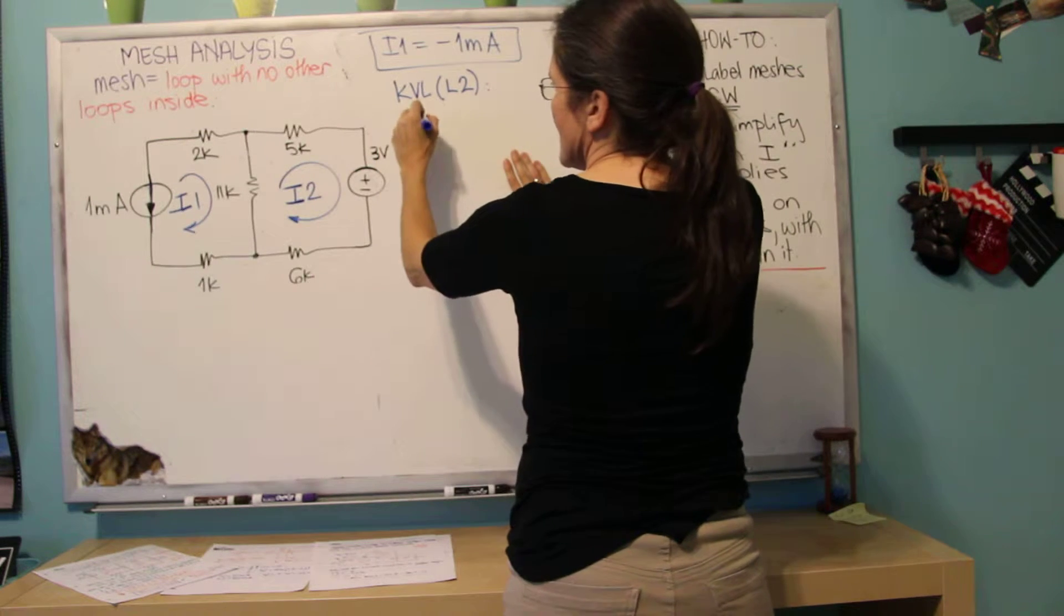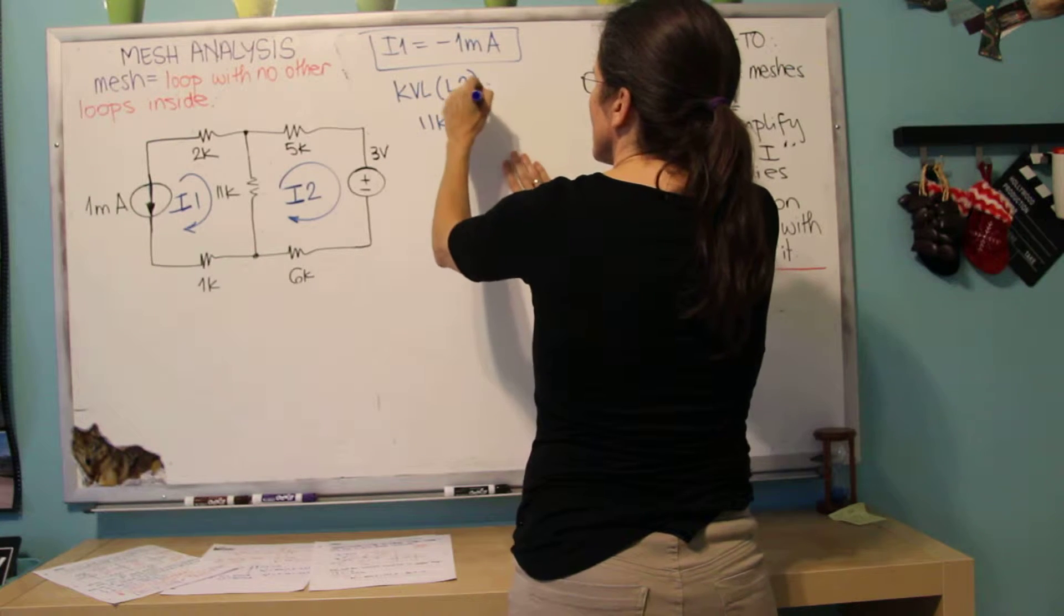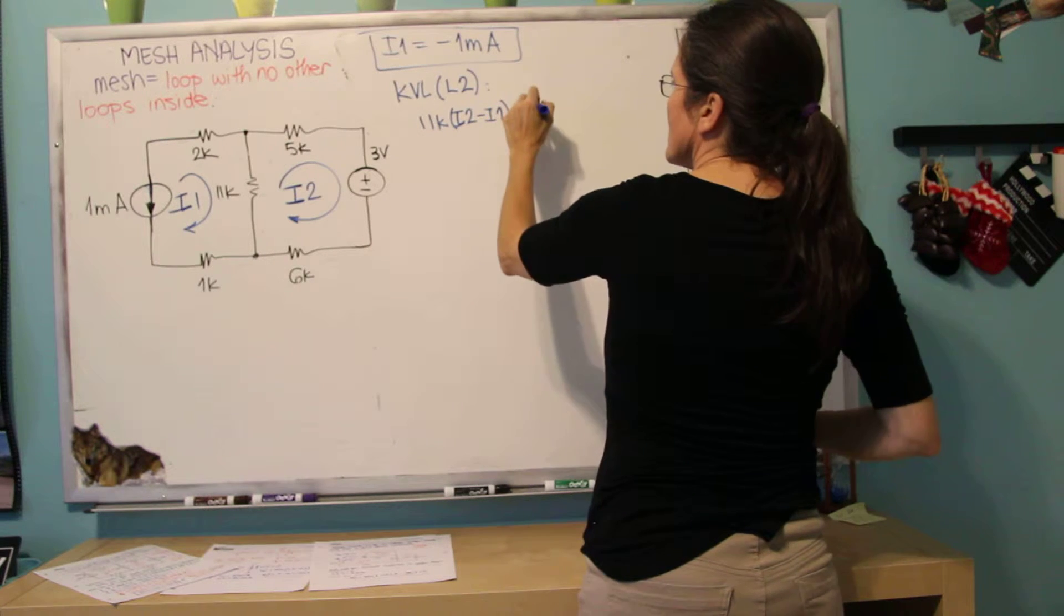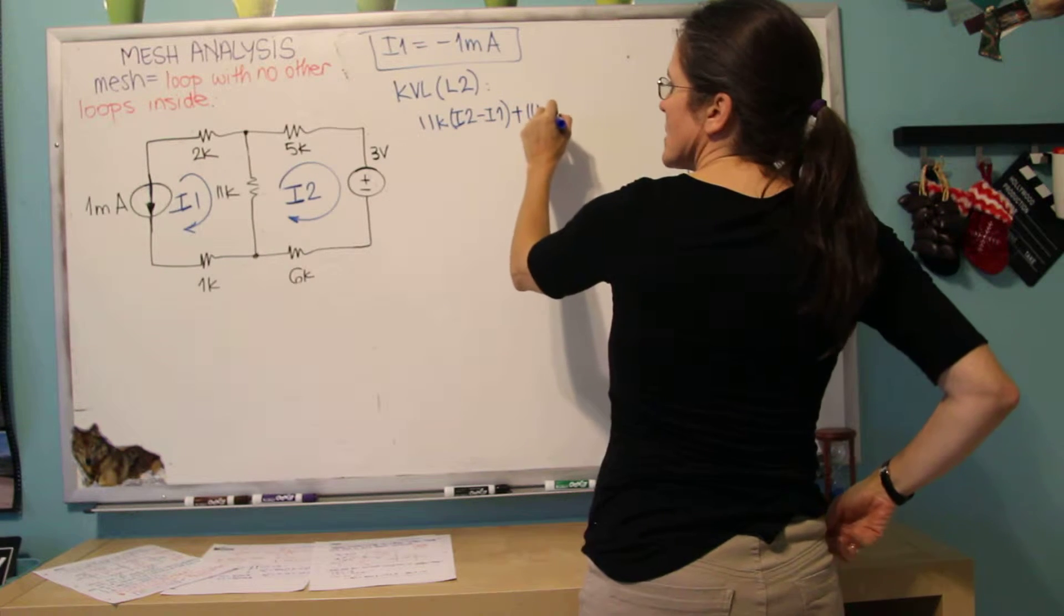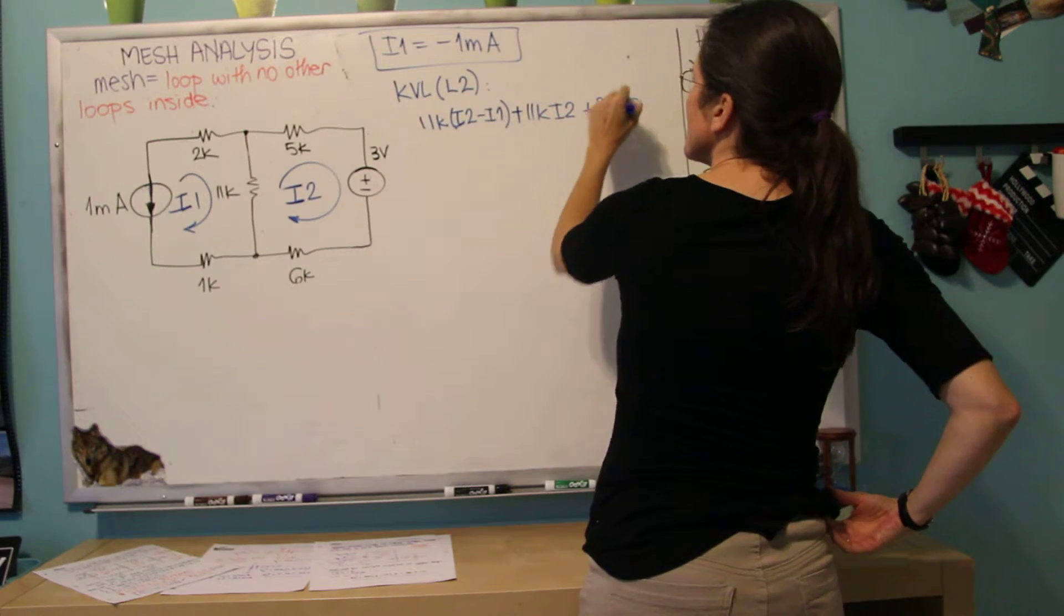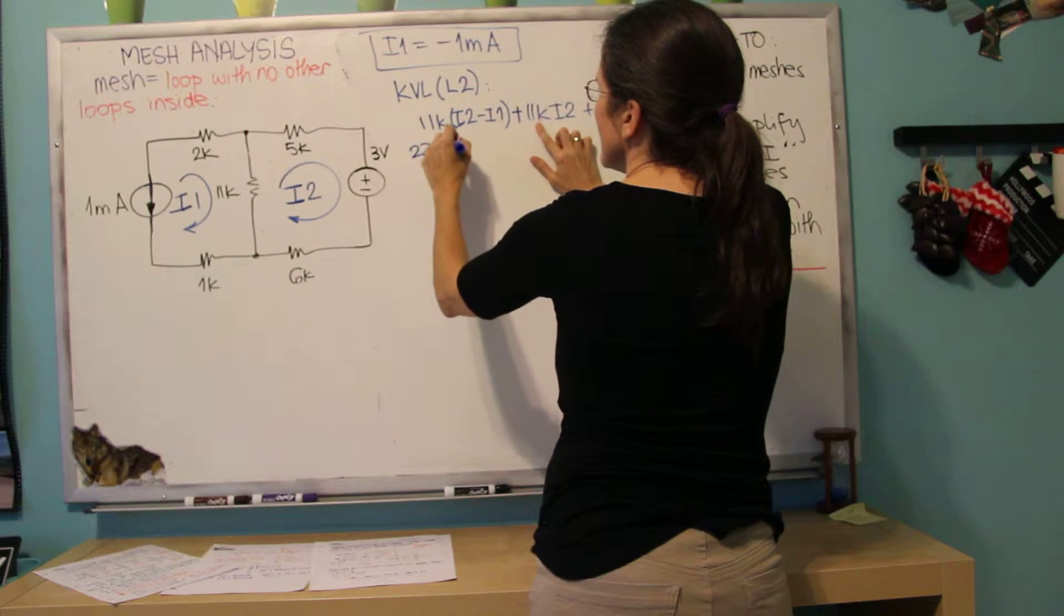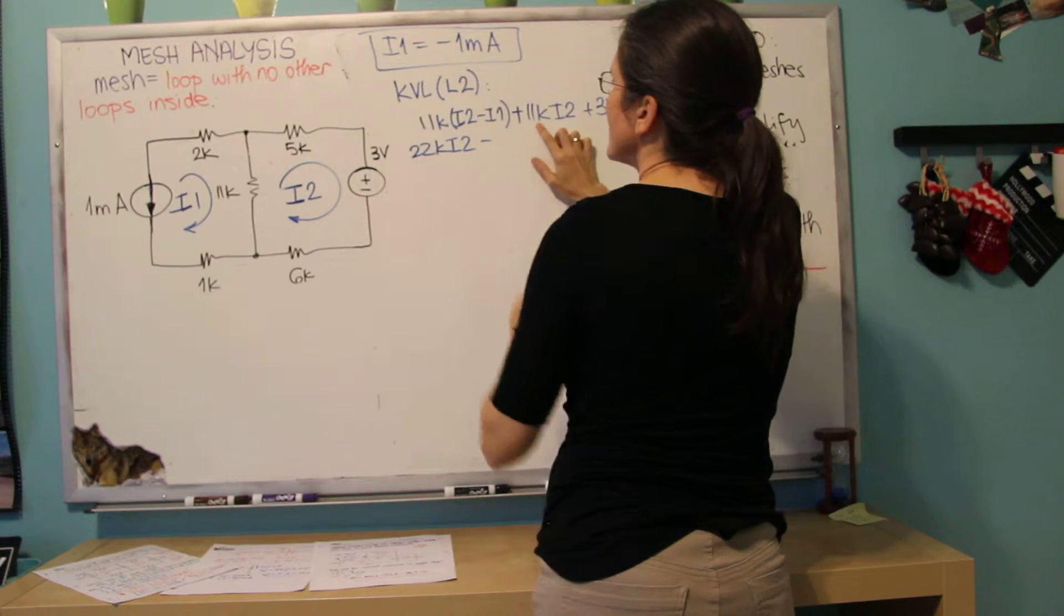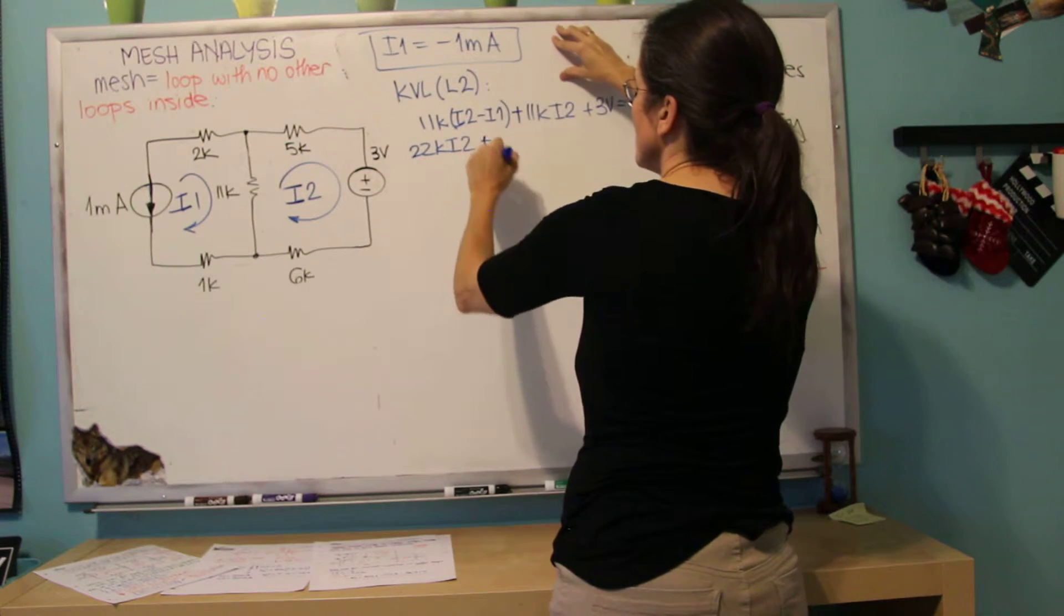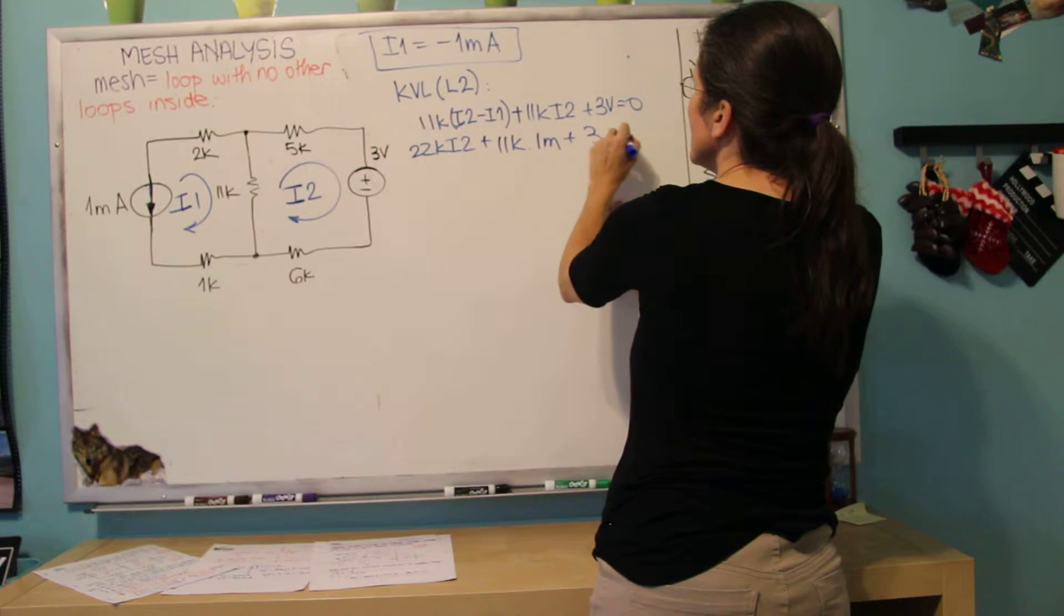So I'm going to write 11k I2 minus I1, 5k and 6k are together, I'm going to also sum the two, 11k I2 plus 3 volts equals 0. So I have 22k I2 minus, now, 11k I1, but I1 is minus 1, so I'm going to say plus 11k times 1 milliamp, plus 3 equals 0.